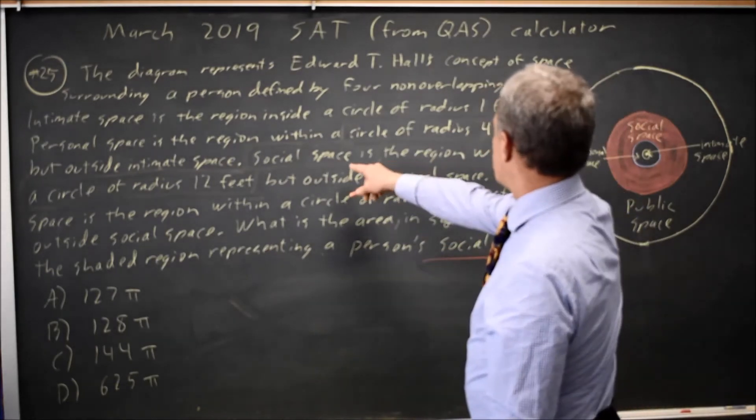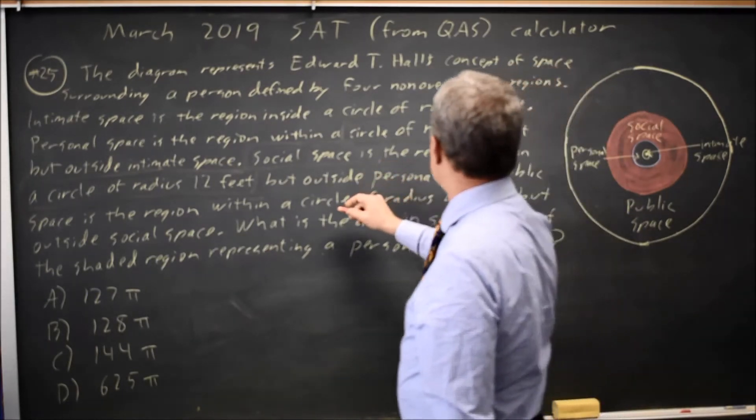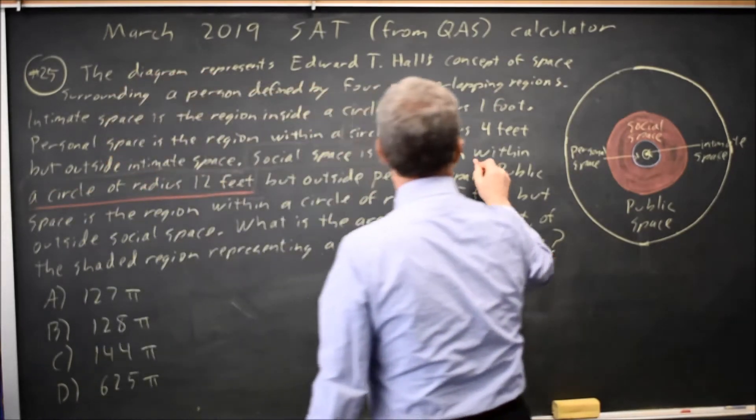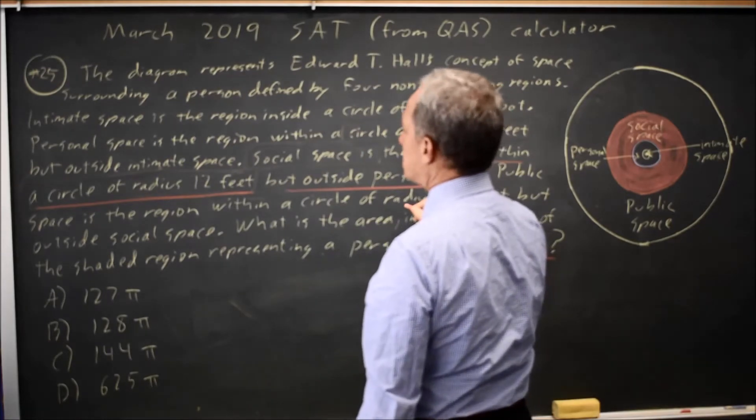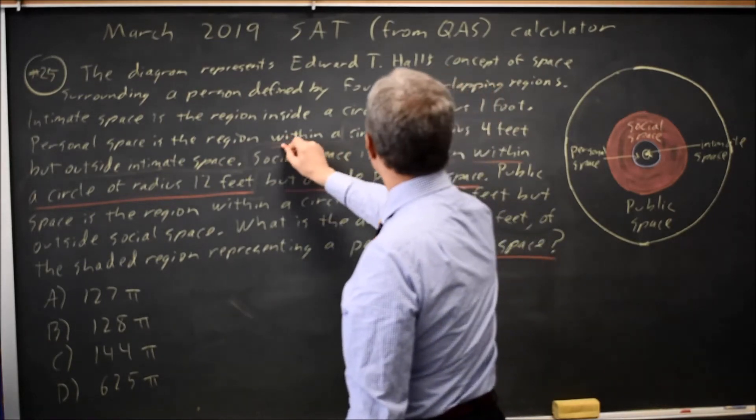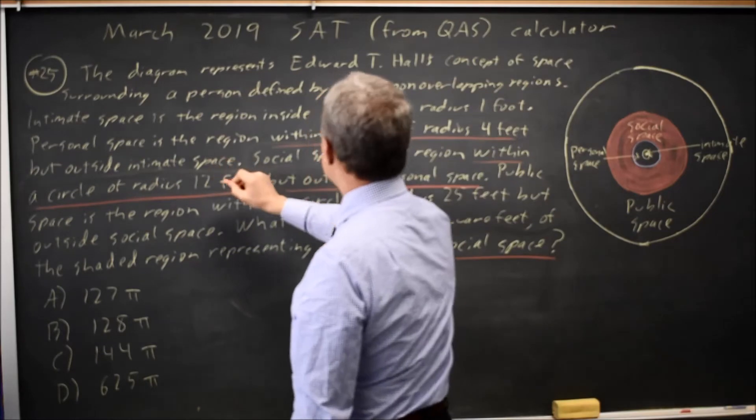Social space, we're told in the middle of the paragraph, is within a circle of radius 12 feet, but outside personal space, where personal space is within a circle of radius 4 feet, but outside intimate space.